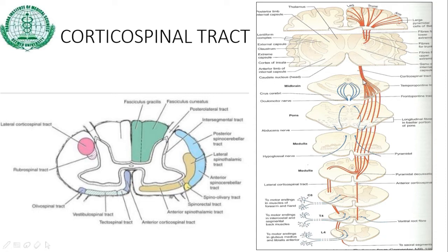At the level of the midbrain, the fibers pass through the middle two-fifths part — the crus cerebri. At the level of the pons, the fibers are dispersed because of the pontocerebellar fibers and the pontine bundles of the pontine nuclei. Then in the upper medulla, they form a swelling known as the pyramid — hence the name pyramidal tract.